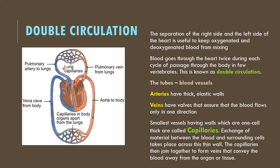This is called double circulation. The deoxygenated blood enters the heart and is taken by pulmonary arteries to the lungs. When they reach the lungs, these pulmonary arteries divide into smaller and smaller blood vessels until they become so small that the wall of the blood vessel becomes one cell thick — these are called capillaries. This thinness allows easy exchange of material: the deoxygenated blood exchanges with oxygenated blood from the lungs. This oxygenated blood then enters the heart through the pulmonary vein and comes out via the aorta.